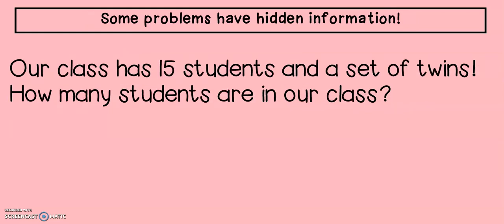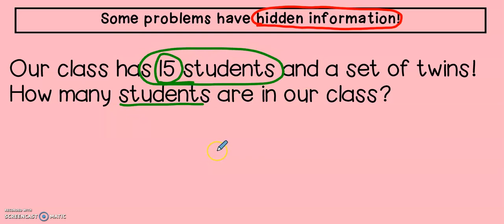The last type of special problem for today has what we call hidden information. It's not that it's hiding from us, but we might miss it if we read our problem too quickly. Let's see what it says. Our class has fifteen students and a set of twins. How many students are in our class? Now, when I'm looking at the problem, I only see one number. That's it. So if I'm asking how many students are in our class, isn't my answer right here fifteen students? No, it's not because there is hidden information.